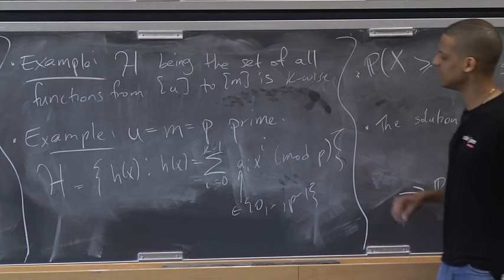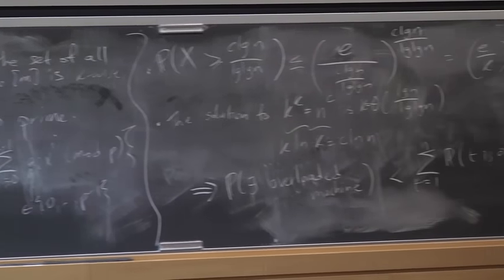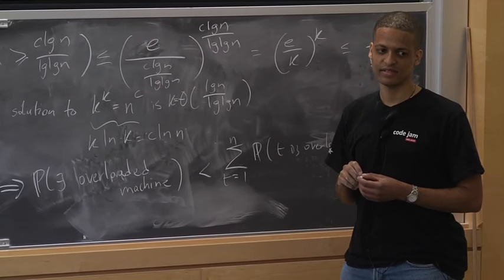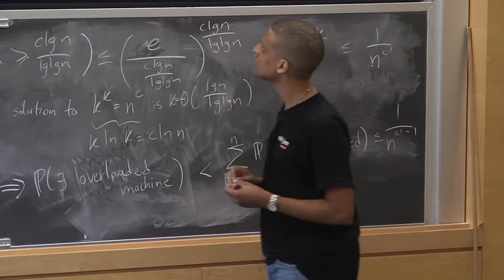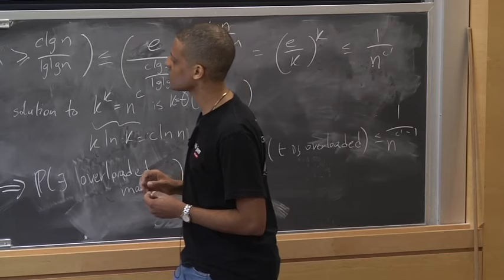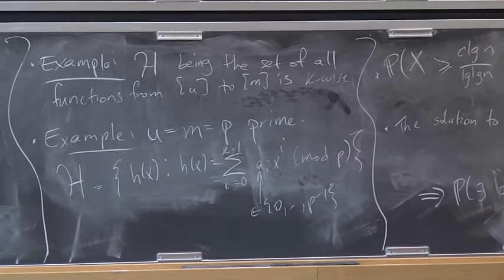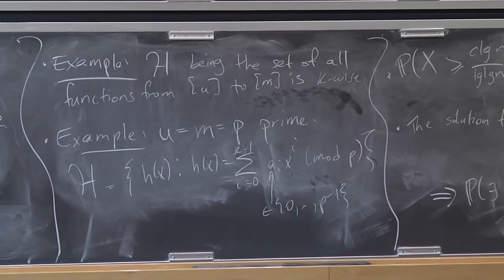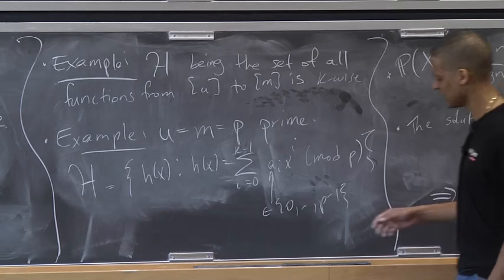Going back to the load balancing example, what level of independence did we need? We needed k equal to log N over log log N wise independence. So you can get away with weaker hash families to accomplish that result.